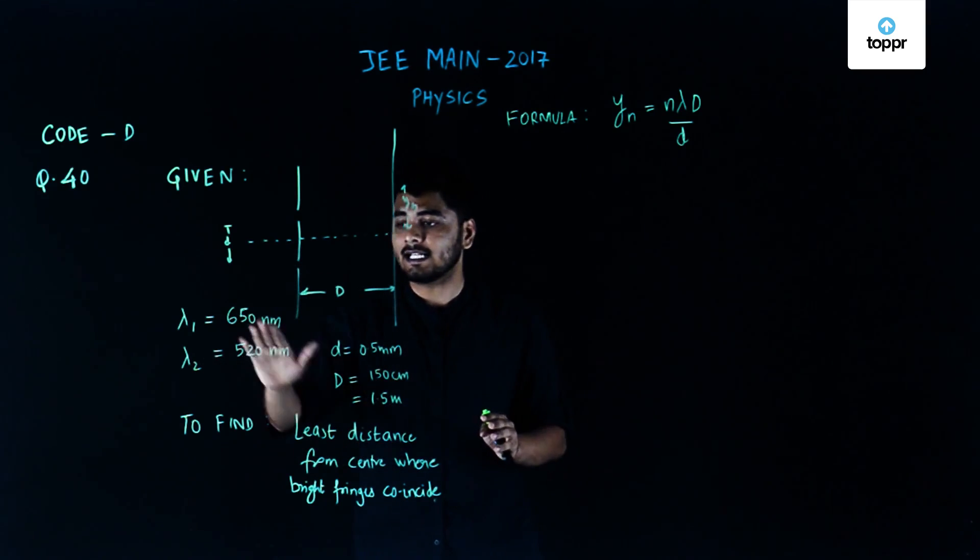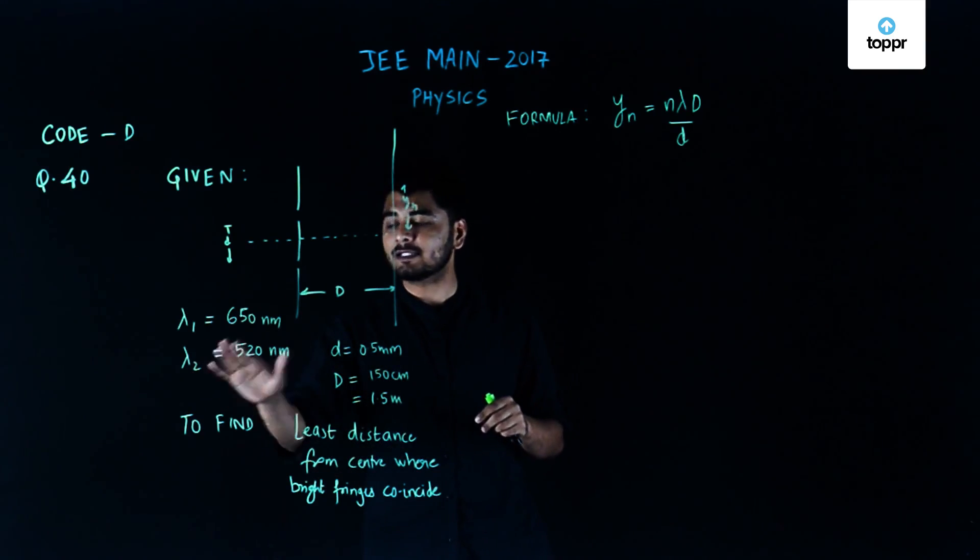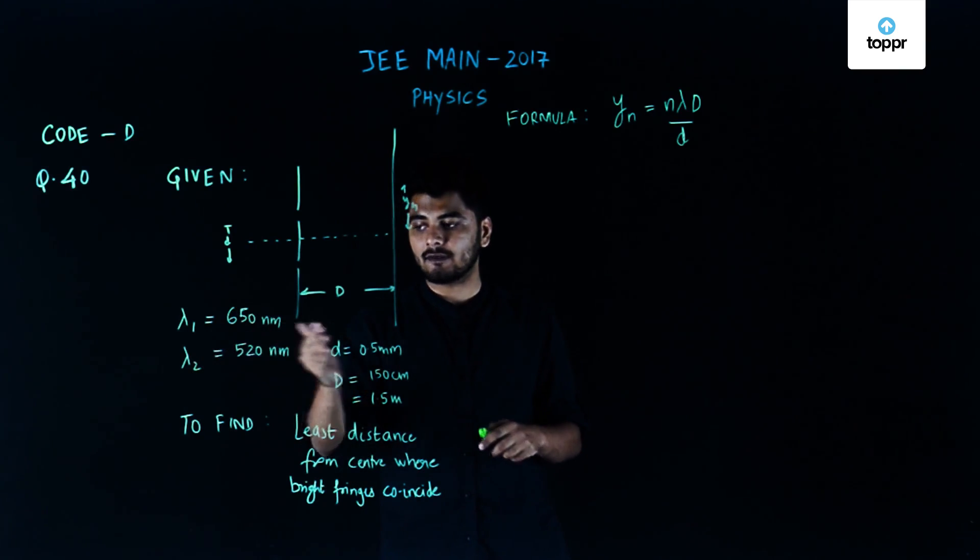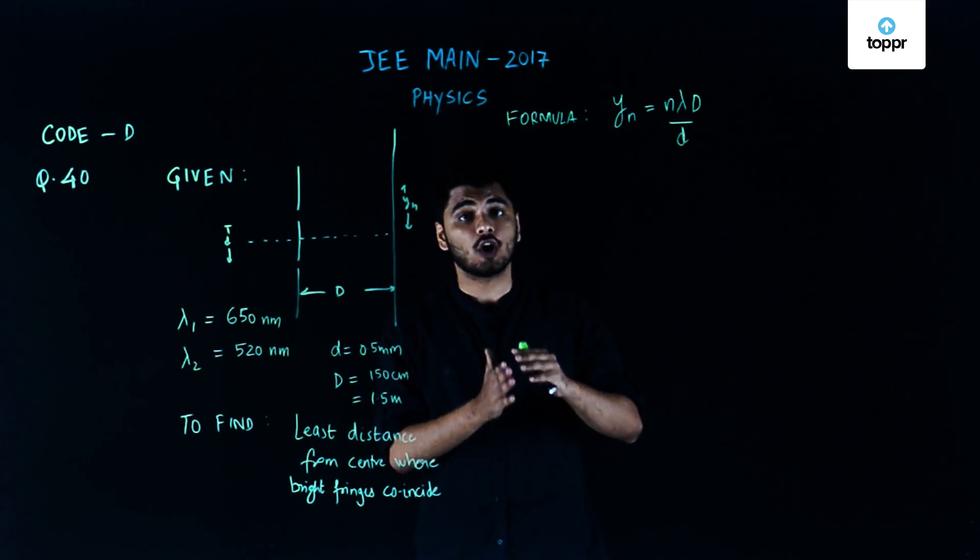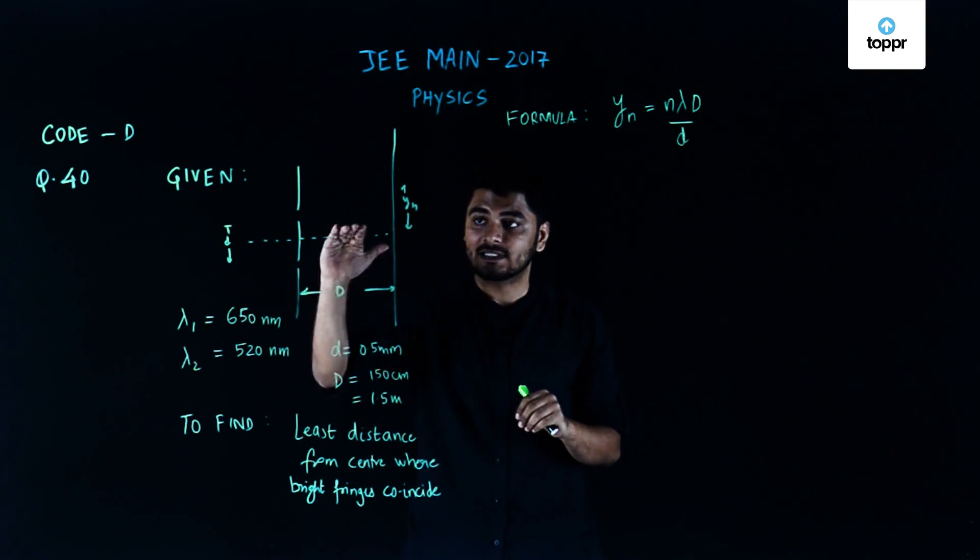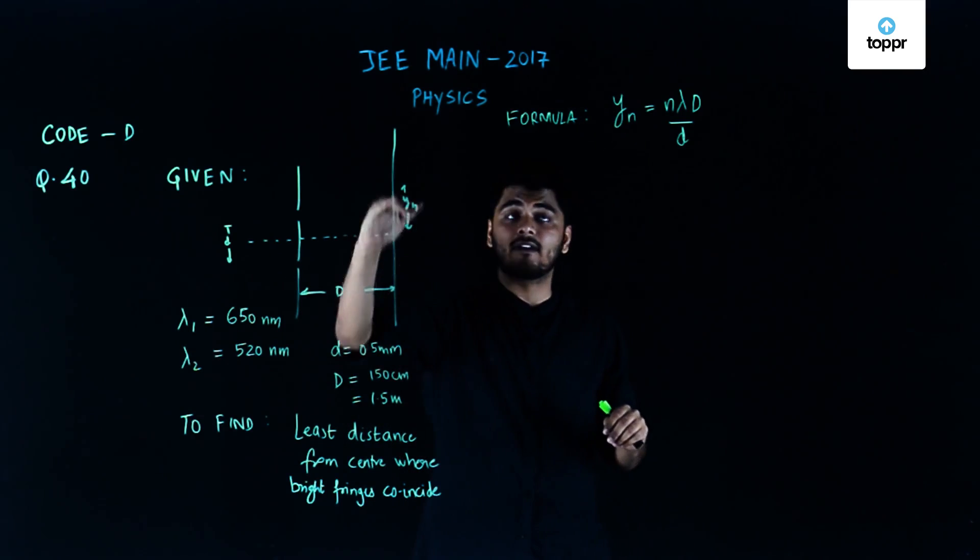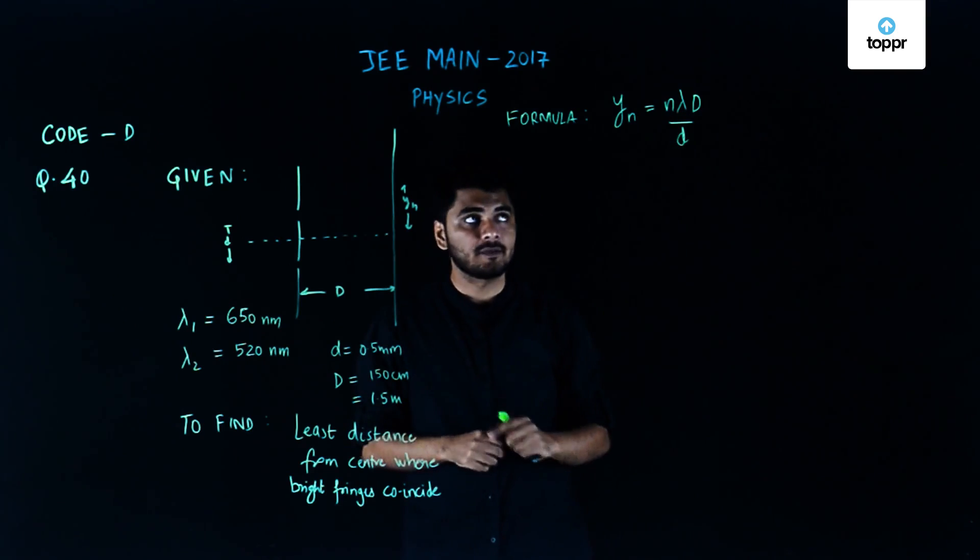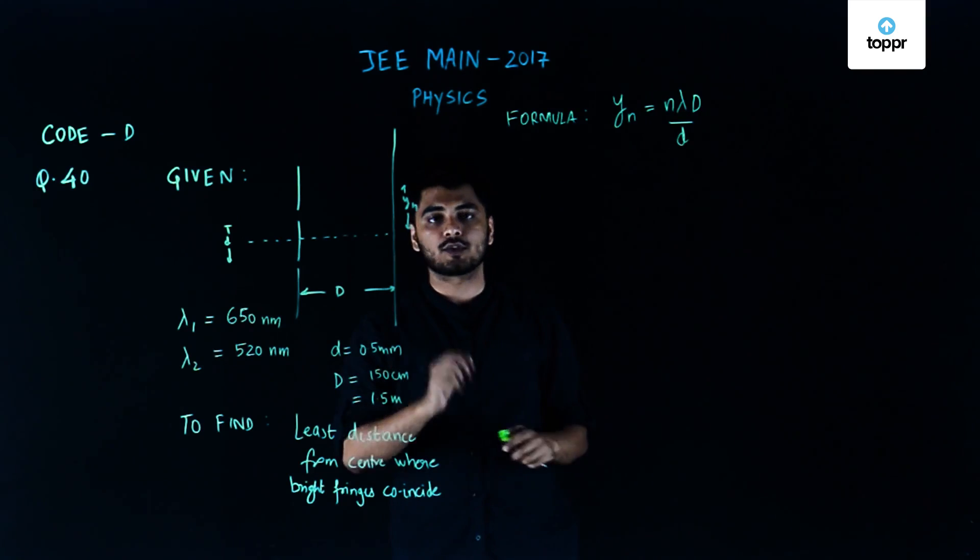Let us say that the nth maxima due to lambda 1 coincides with the mth maxima due to lambda 2, that is light of wavelength 650 nanometers and wavelength 520 nanometers. We know that the center of the nth bright fringe is given by the y coordinate: n times lambda times capital D by small d, where capital D is 1.5 meters and small d is 0.5 mm.